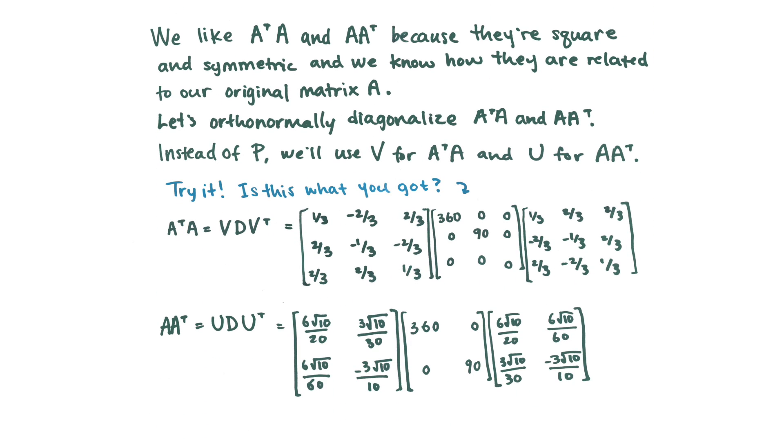We like A transpose times A and A A transpose because they're square and symmetric, and we know how they're related to our original matrix A. We like square symmetric matrices because we know that they have special properties, whereas our original matrix A was really difficult to deal with. It's rectangular, it might be really big, we don't really know what to do with it. So we're going to orthonormally diagonalize A transpose A and A A transpose, which is what we did before, where we divide the eigenvectors by their magnitudes, and we end up with a special matrix. So instead of P, since we have two different matrices, we're going to use V for A transpose A and U for A A transpose. And so you can try it right now with that matrix we had.